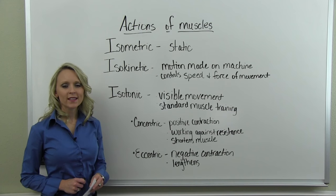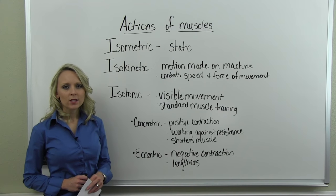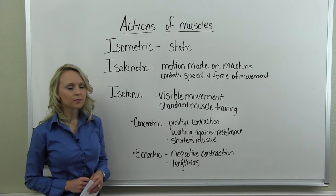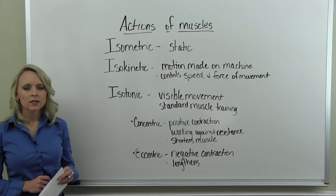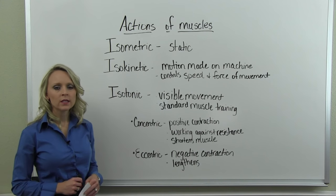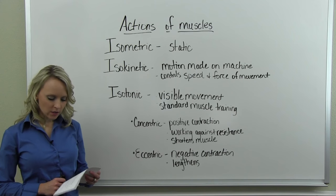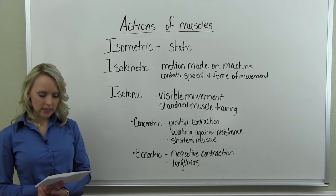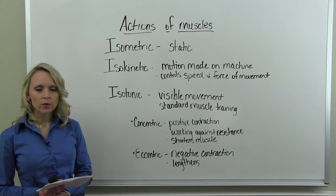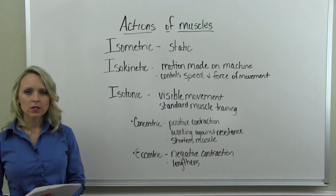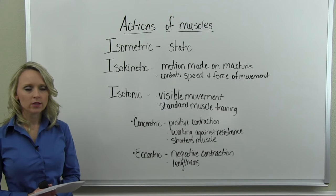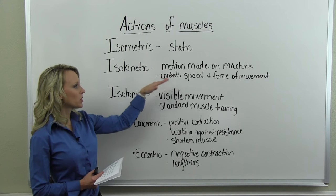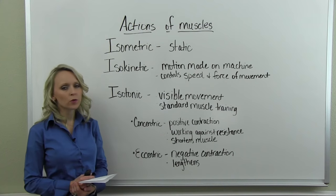We're going to talk about the actions of muscles. The main actions are isometric, isokinetic, and isotonic. Isometric action is a stable, unmoving action of the muscle — a static exercise where the muscle and joint do not move and the muscle does not change length. Isometric exercise can strengthen the muscle but only in the position that the exercise was held. Isokinetic exercises require a machine; it's a motion made on a machine that controls the speed and force of the movement.